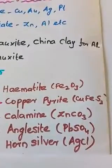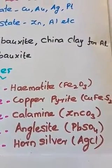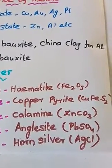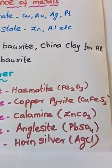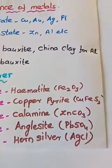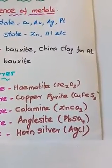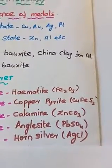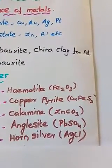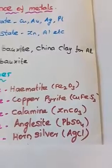The formula of hematite is Fe₂O₃. From this you can easily understand that the metal is combined with oxygen, which is why it is named an oxide ore. Hematite is an ore for iron. Next, copper pyrite — in copper pyrite, sulfur is combined with copper and iron, which is why it is named a sulfide ore, and it is an ore for copper.